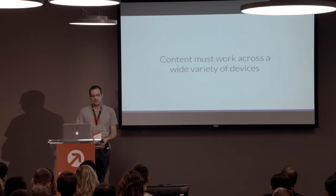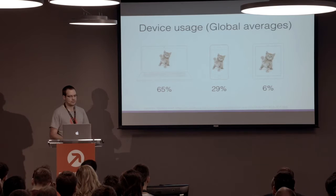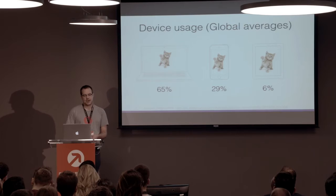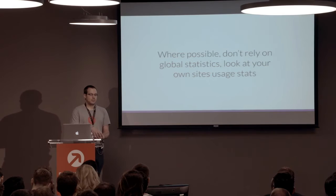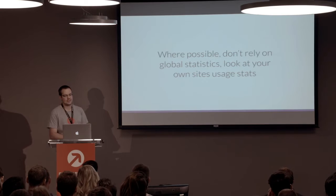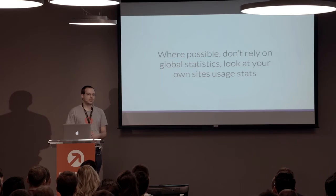Your content must work on a wide variety of devices, and it needs to be able to work responsibly. If we take a look at the global averages for device usage, we're looking at 65% still on desktop, but we're moving to 29% on mobile and 6% on tablet. At Beamly, we're actually looking at 91% on mobile. It completely varies by site, so it's definitely worth looking at your own site usage statistics when considering who's actually using your site.